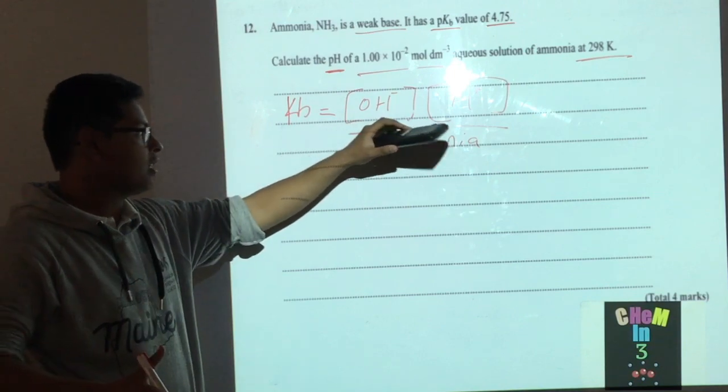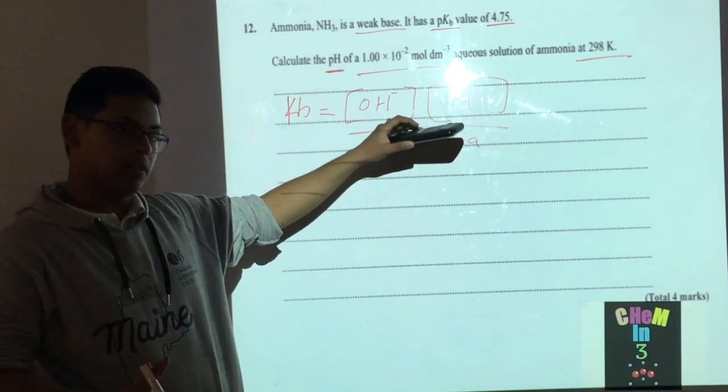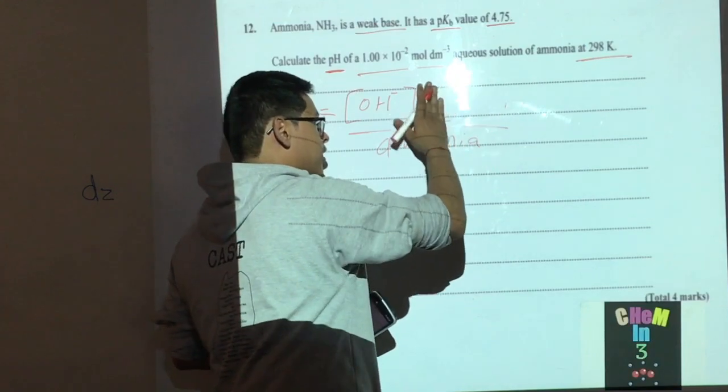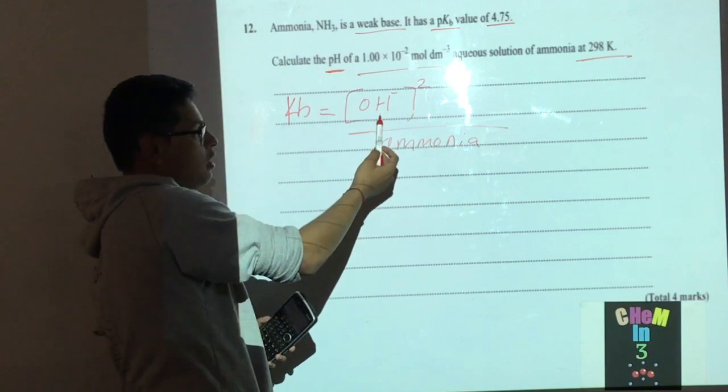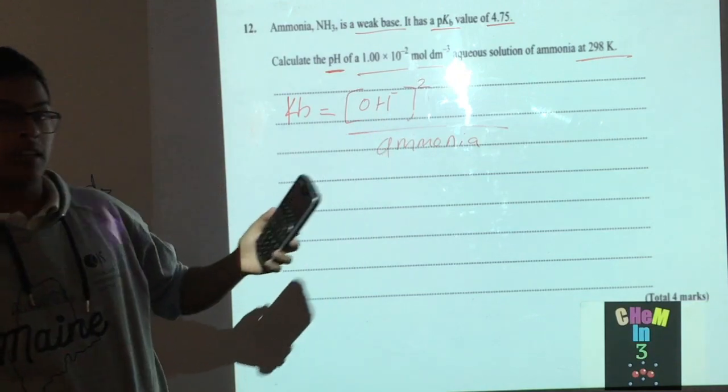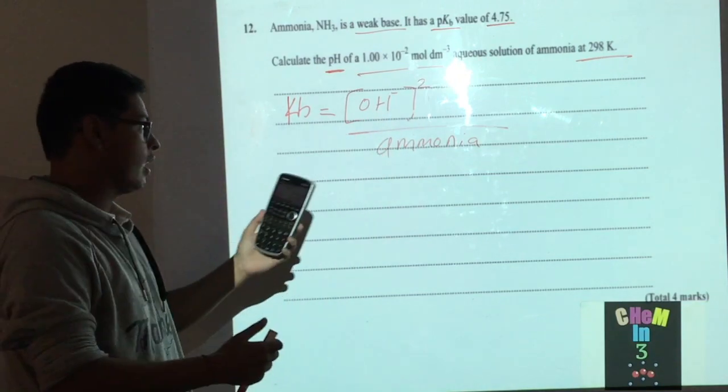This is why rather than having to write both of them, we basically square the OH⁻ value. Since we have a base, bases typically release OH⁻ into the water when they dissolve.